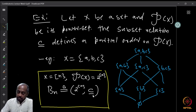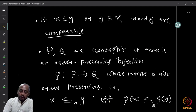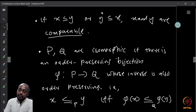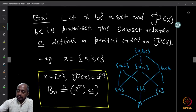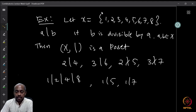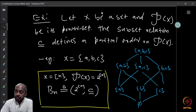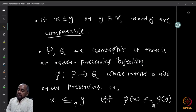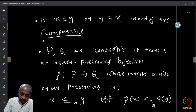When we take any two elements x and y of a poset P, if x ≤ y or y ≤ x, we say x and y are comparable. For example, 2 and 5 under divisibility — since 2 does not divide 5 and 5 does not divide 2, they are not comparable. Similarly, {a,b} and {a,c} in the subset poset are not comparable since neither is a subset of the other.